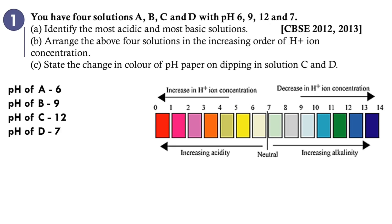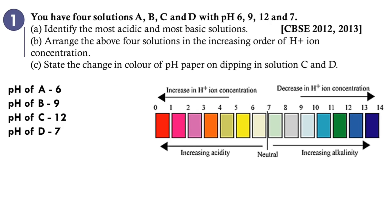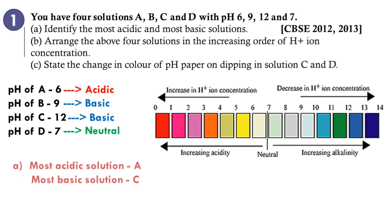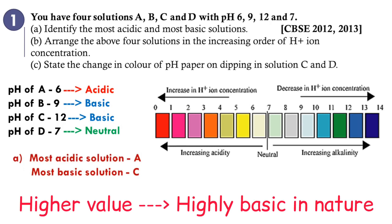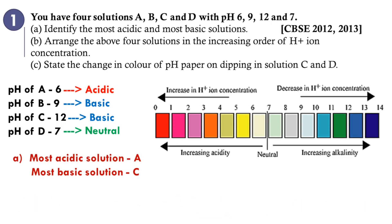pH of A is 6, B is 9, C is 12, and D is 7. So A is an acidic solution, B and C are basic solutions, and D is a neutral solution. The most acidic solution is A. For the most basic solution, a higher pH value means more basic — so the most basic solution is C, with pH 12.